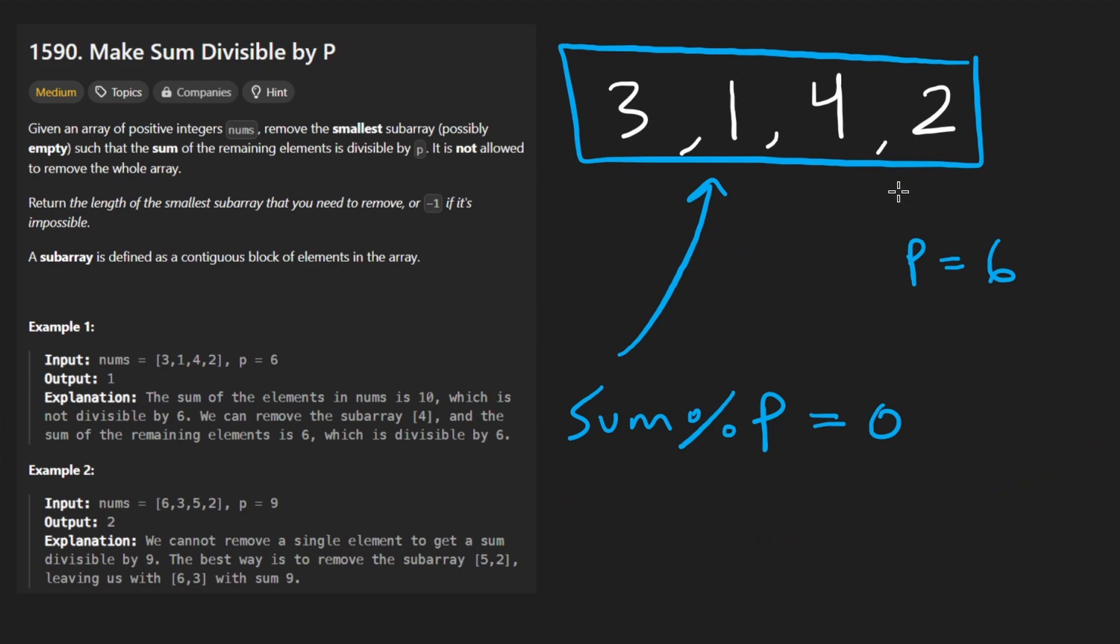In this first example, it looks like it is just one. If we remove this four, we would see that the remainder is four plus two, that's six, which is divisible by six. Now, what is the brute force solution to this problem?